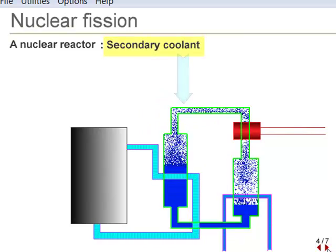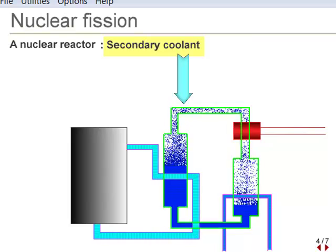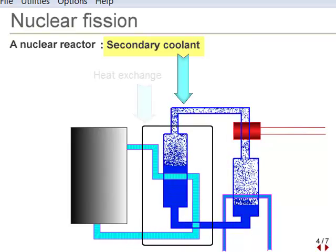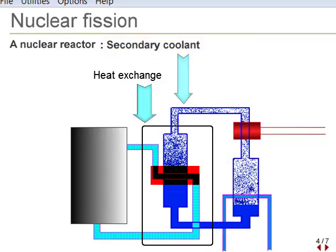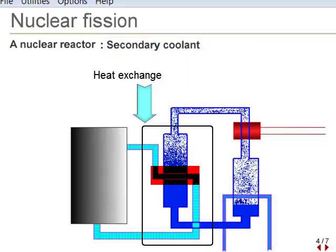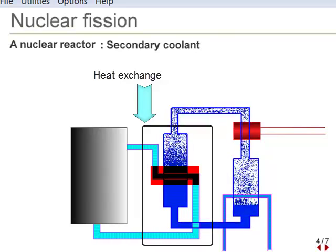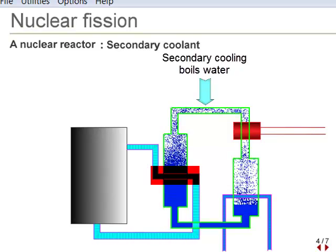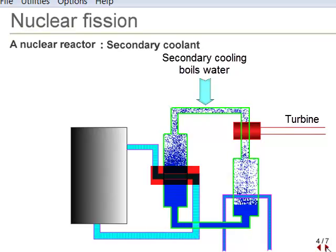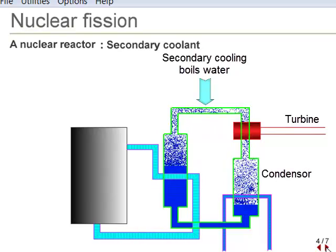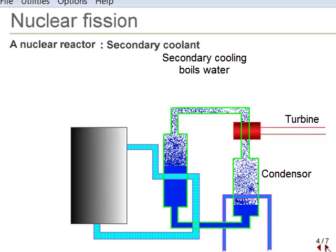The secondary coolant is the part of the reactor that performs the actual work that is converted into electrical energy. Coolant passes through a chamber where it is in thermal contact with the heated primary coolant from the reactor core. The heat from the primary coolant causes the water to turn into steam, which passes through a turbine that is used to produce electrical energy. It is then condensed back into water to re-enter the cycle once again.